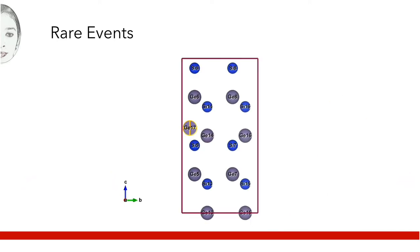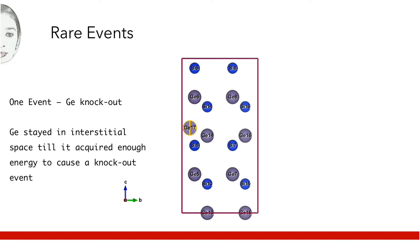I will elaborate this further with the help of an example. Here we have an interstitial germanium atom in silicon-germanium crystal. The germanium atom stays in interstitial space for some time until it gains energy to knock out another germanium atom from crystal lattice and finally replace it. Here only the knockout event is considered substantial enough to be traced in a Kinetic Monte Carlo simulation.